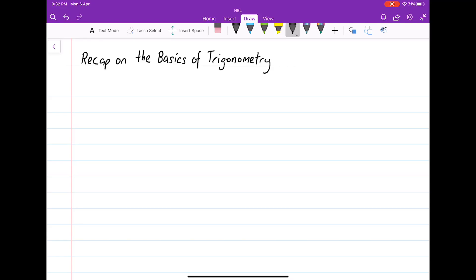Let's do a short recap on the basics of trigonometry. From what you've learned before, let's start with a right-angled triangle with an angle theta. In this case, the angle theta is between 0 degrees and 90 degrees.